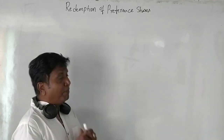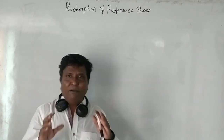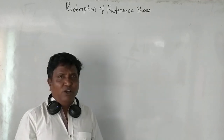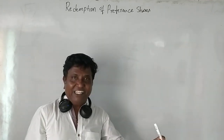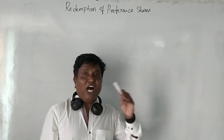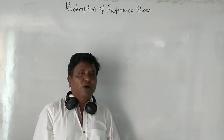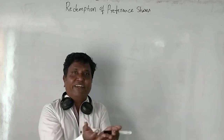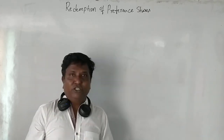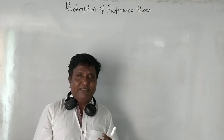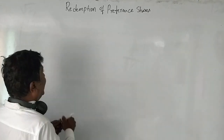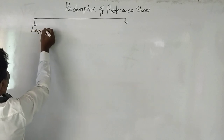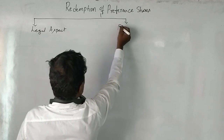Now let us come to the procedure for payment of these preference shares. Section 55 clearly states the first rule: whatever the amount of redeemable preference share capital you are redeeming, you have to pay it out of the profits. Whatever the company earns as profit, from that profits the company has to repay the preference share capital. In understanding this procedure, we need to understand two aspects under Section 55: one is the legal aspect, and the other one is the financial aspect.